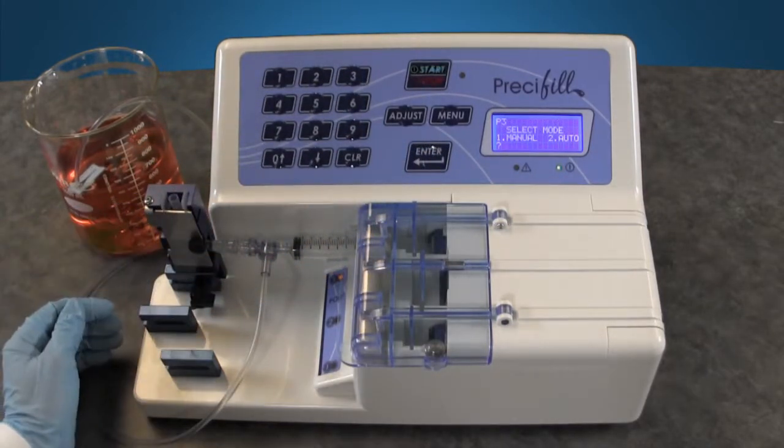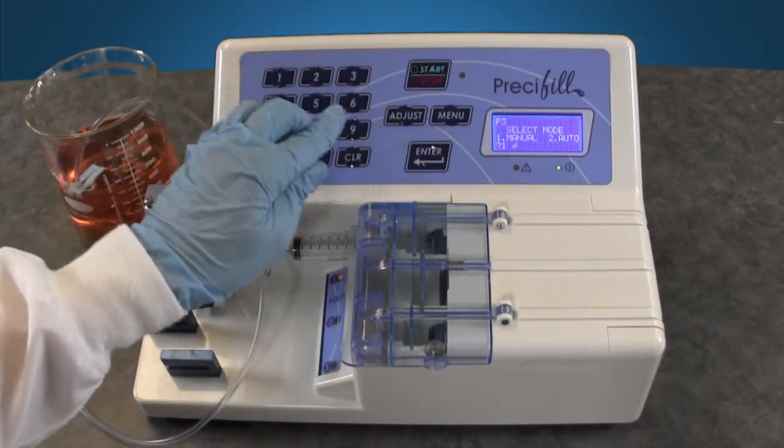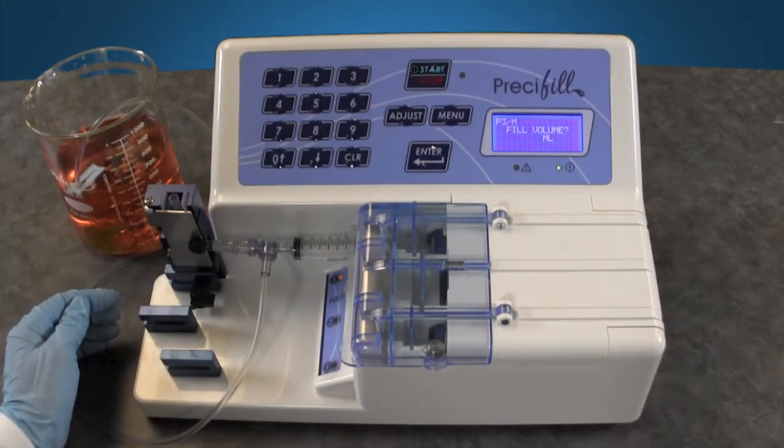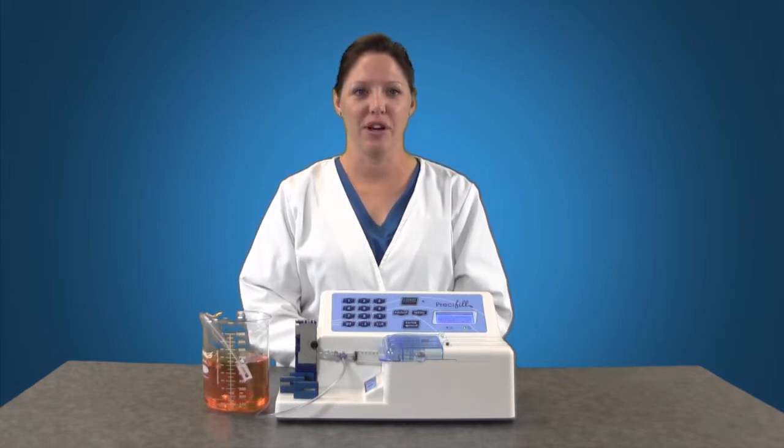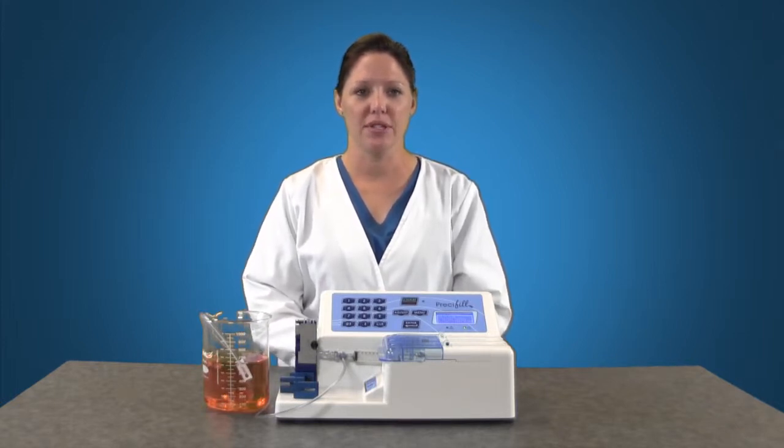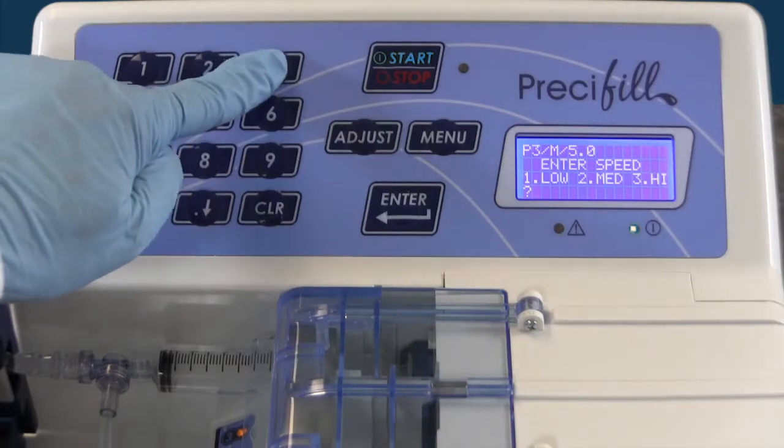You now have an option to choose the fill mode, manual or automatic. We will start with manual and explain the automatic process shortly. Press 1 and enter for manual. Enter your fill volume, in this case 5 mils and enter. You need to select your speed. 1 for low, 2 for medium and 3 for high. On average you will use 2 for medium speed. Liquids that are very viscous or generate a lot of bubbles may need to be used on a low speed. Liquids that are more watery and don't generate bubbles can run on high. The smaller the fill volume, the lower the speed to ensure accuracy. We will demonstrate high speed initially. Press 3 and enter.